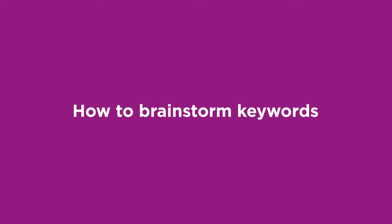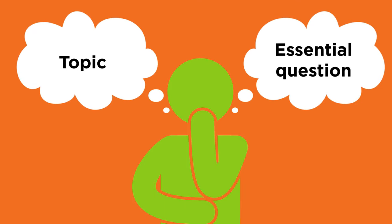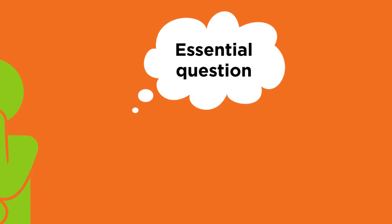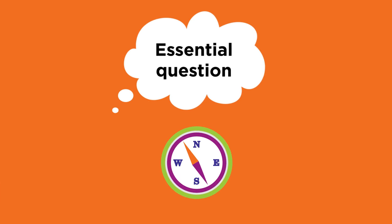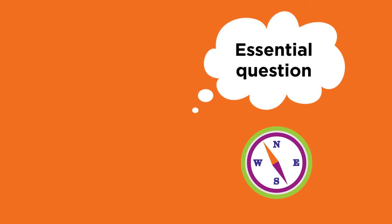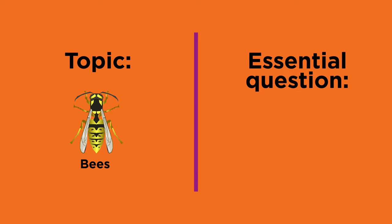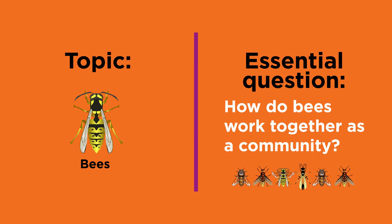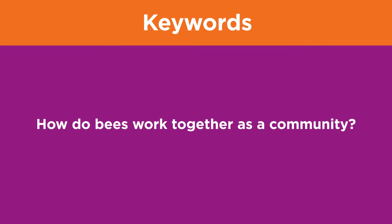You probably already have a topic for your research project and maybe even an essential question that you are thinking about. The essential question is what guides your research, and it has more than one answer. We will explore the topic of bees in this video. Your essential question is: how do bees work together as a community? Let's get started — take a look at your question and pick out the words that represent the main ideas.